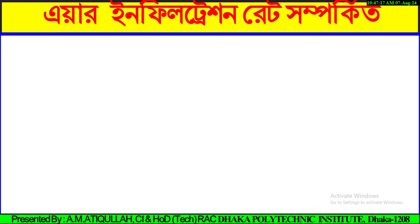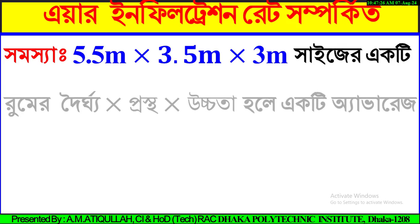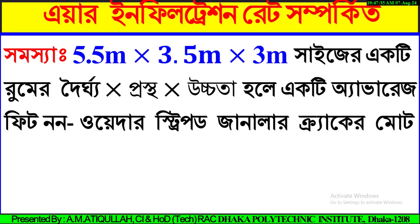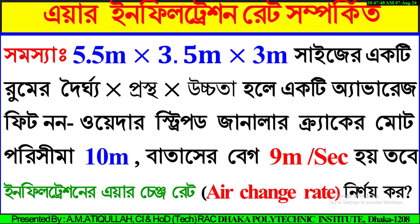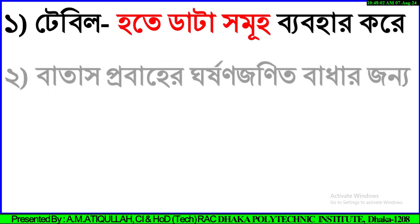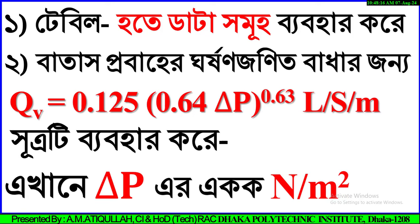Care infiltration rate sampar kito - amara dekhi 5.5 meter guon 3.5 meter guon 3 meter size-er ekti roomer - dorgho, posto, uttrata hule - ekti average fit non-weather sti pot general crack. Wind speed 9 meter per second high tabe infiltration air change rate Q = 0.125 liter per second per meter, delta P air ako kolo Newton per borgho meter.